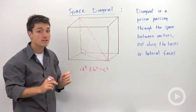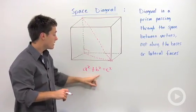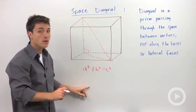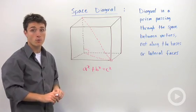So the key to the problems with space diagonals is remembering that you can apply the Pythagorean Theorem. Usually you're going to have to apply it more than once.